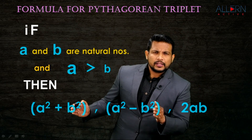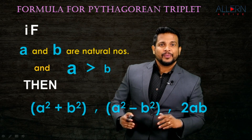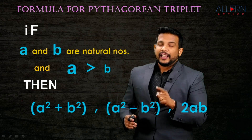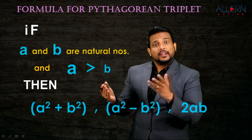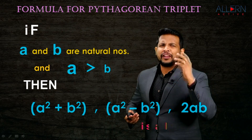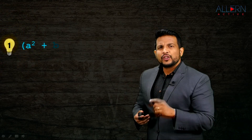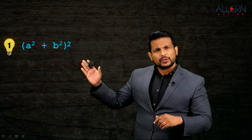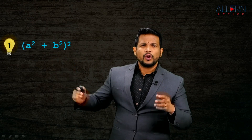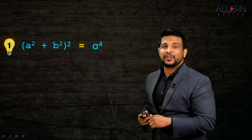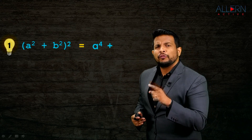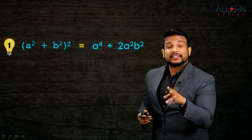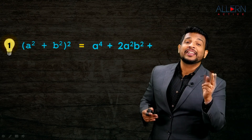We'll take the biggest number A²+B², do its square, then square the other two and add them - if they are equal, the formula is correct. Squaring A²+B², which is in the form (A+B)², we get: A⁴ + 2A²B² + B⁴. That's result number one. Now the next number is A²-B²; squaring that: A⁴ - 2A²B² + B⁴.